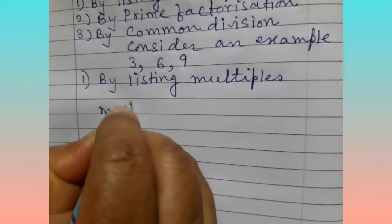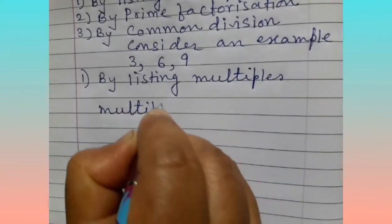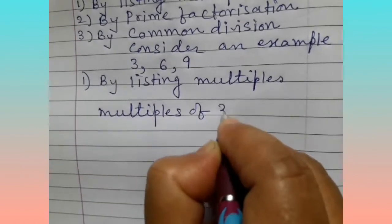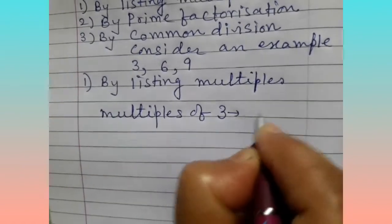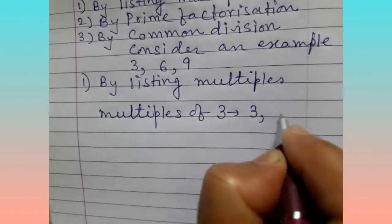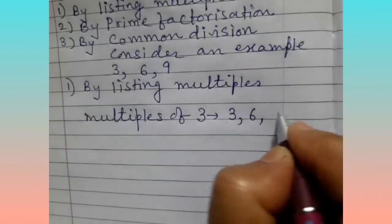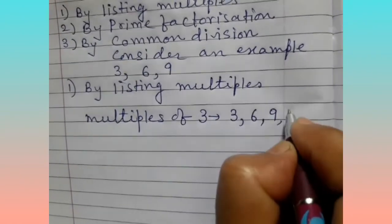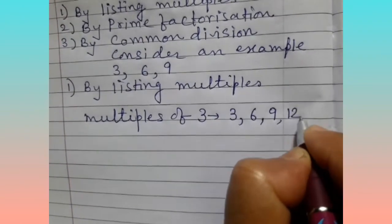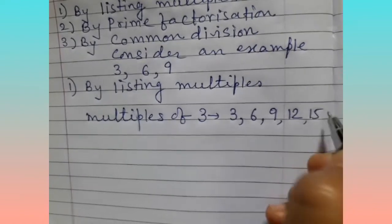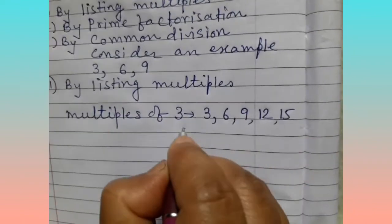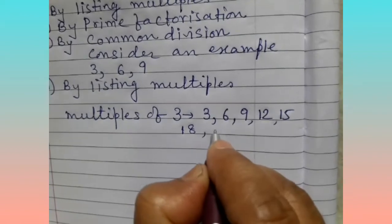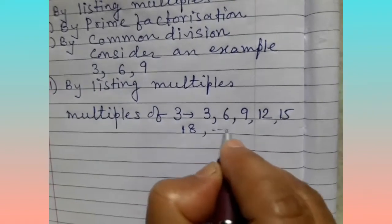Multiples of 3: 3 ones are 3, 3 twos are 6, 3 threes are 9, 3 fours are 12, 3 fives are 15, 3 sixes are 18, and so on.